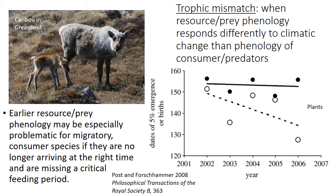There is starting to be a mismatch between when plants are emerging and when caribou are arriving and giving birth. This is a problem because plants are most nutritious when they're first emerging — new leaves are easier to digest and not as well defended yet. This is a critical period when caribou can get a lot of nutrition, which is especially important because they have new calves to support. But if caribou are arriving later relative to plant emergence, they may miss that critical highly nutritious window.